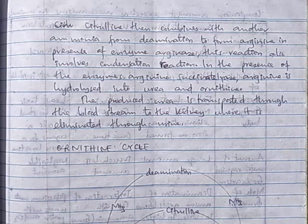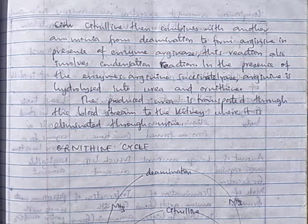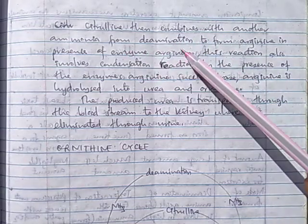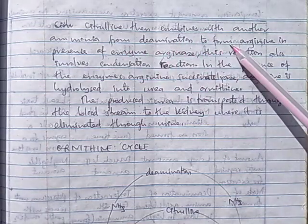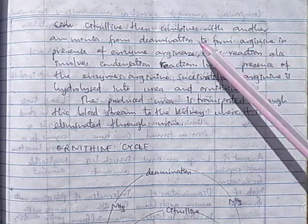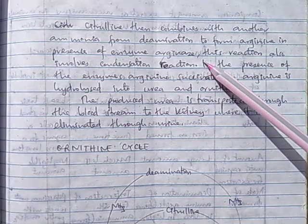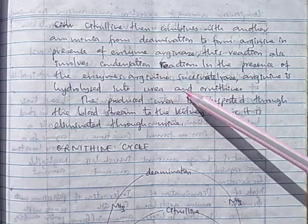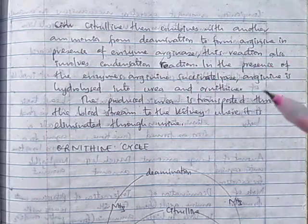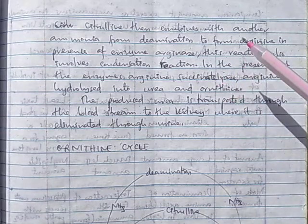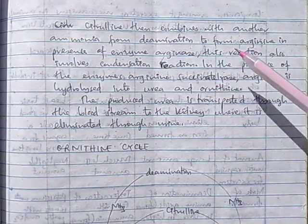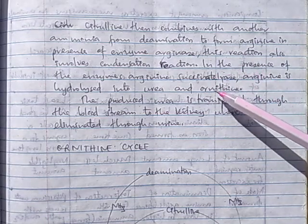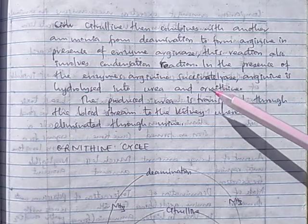In the second step, citrulline combines with another ammonia from deamination to form arginine in the presence of enzyme arginase. This reaction also involves condensation reaction and involves loss of water.